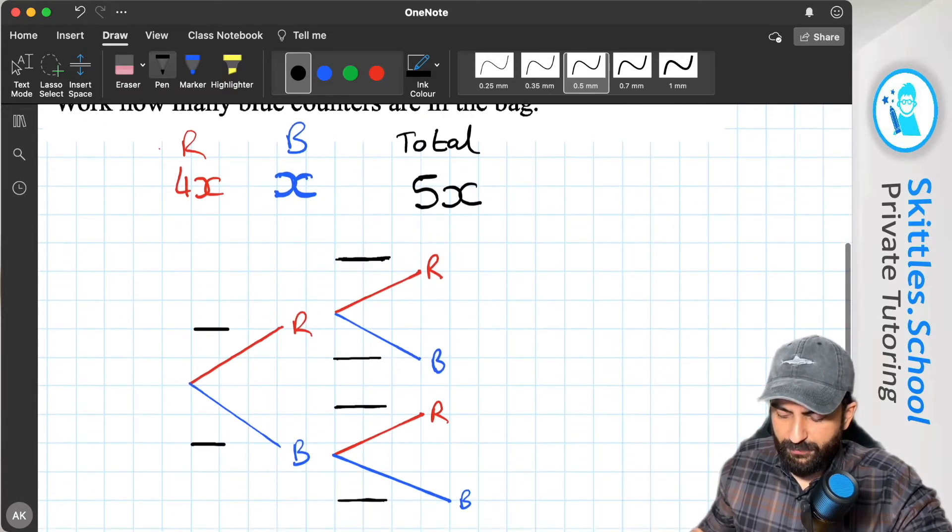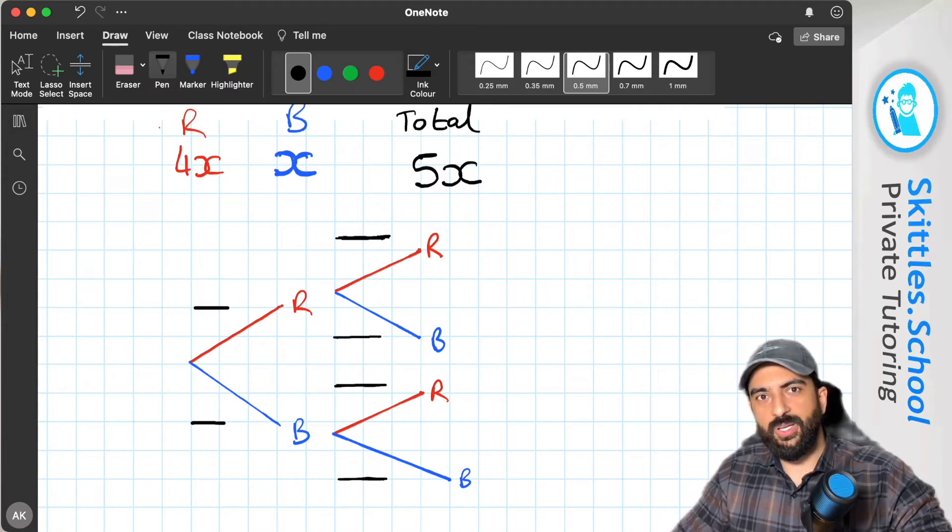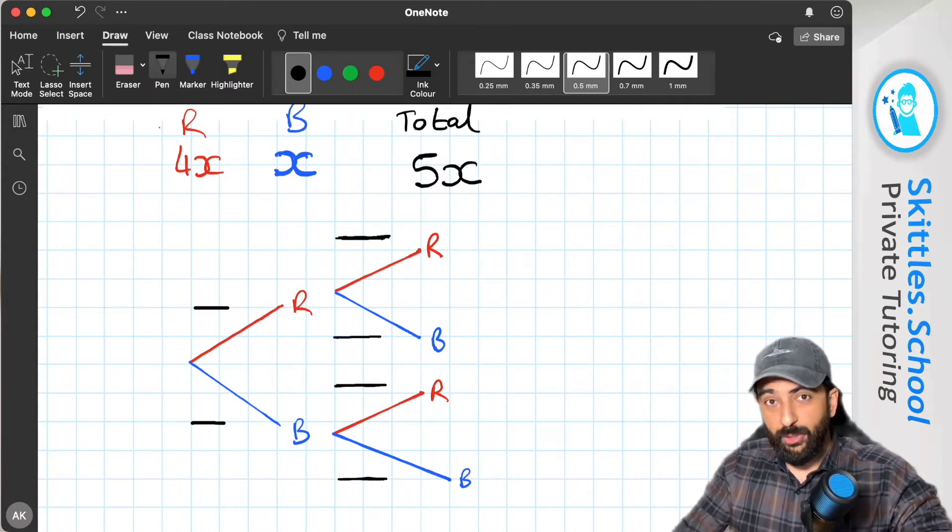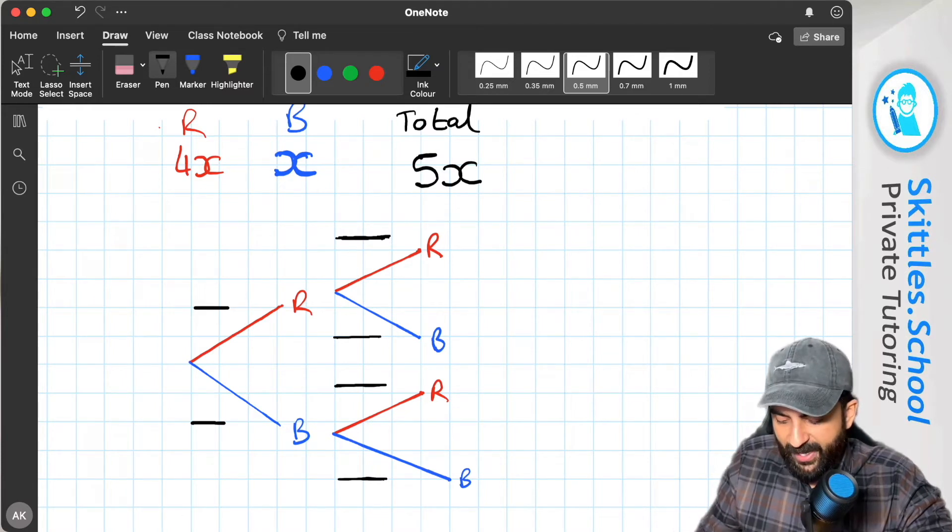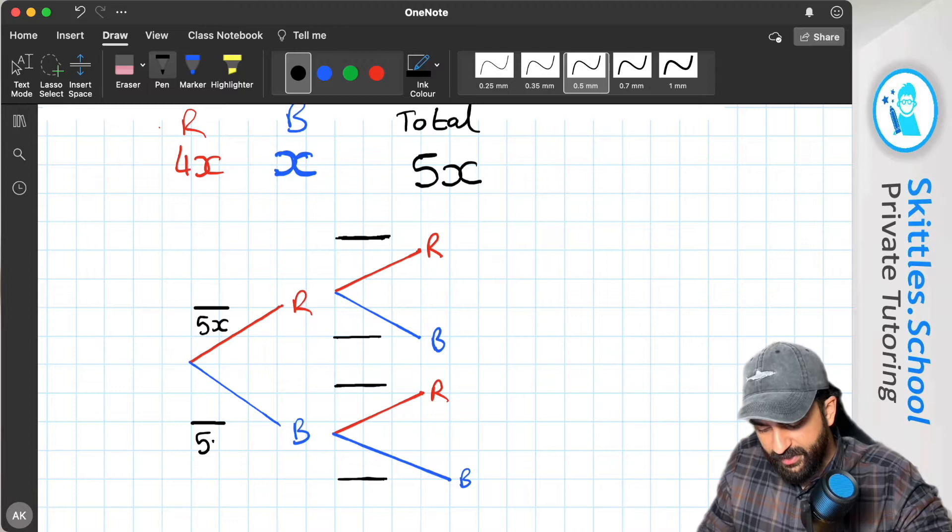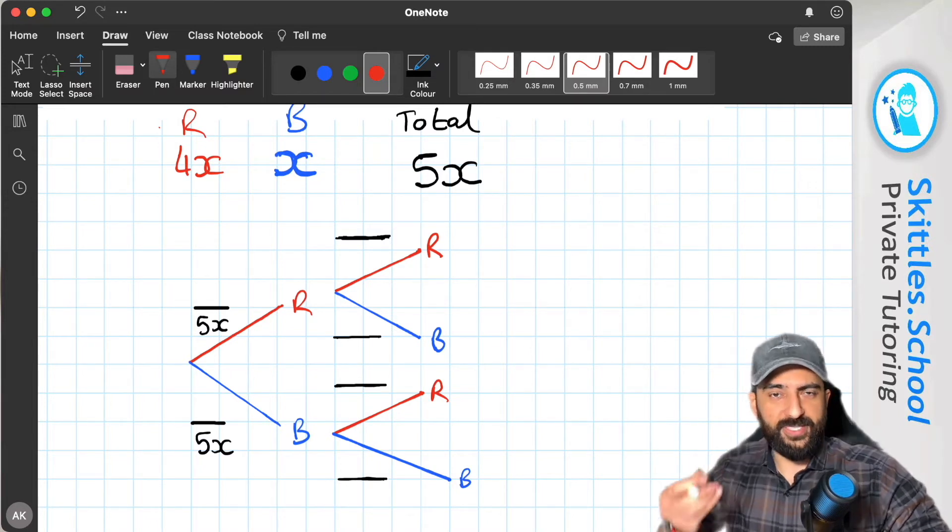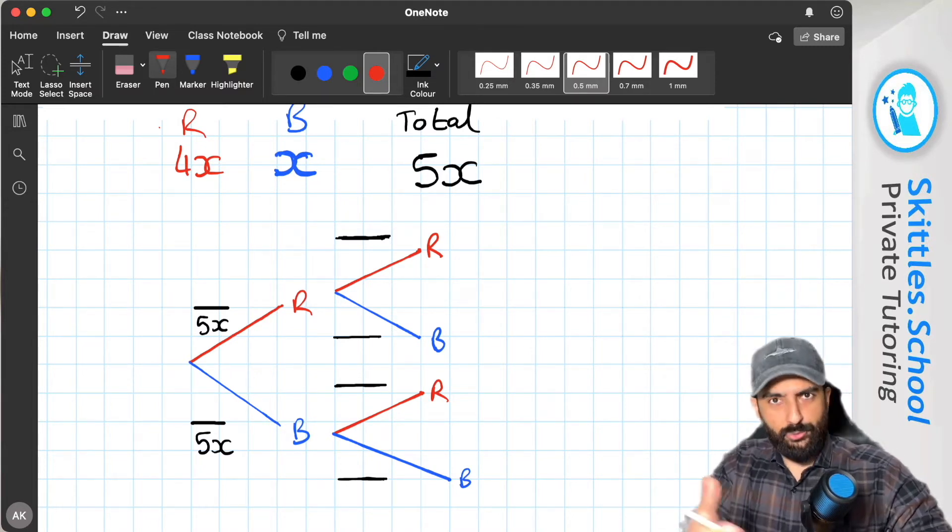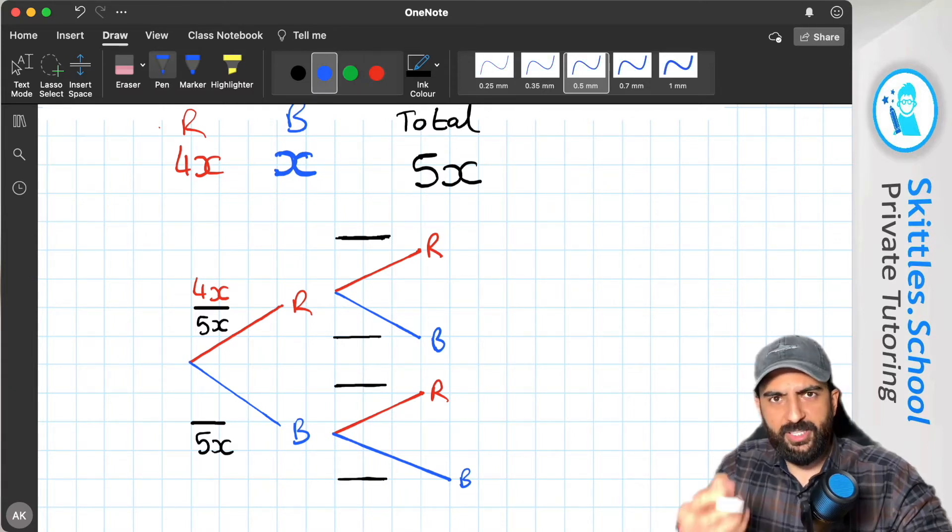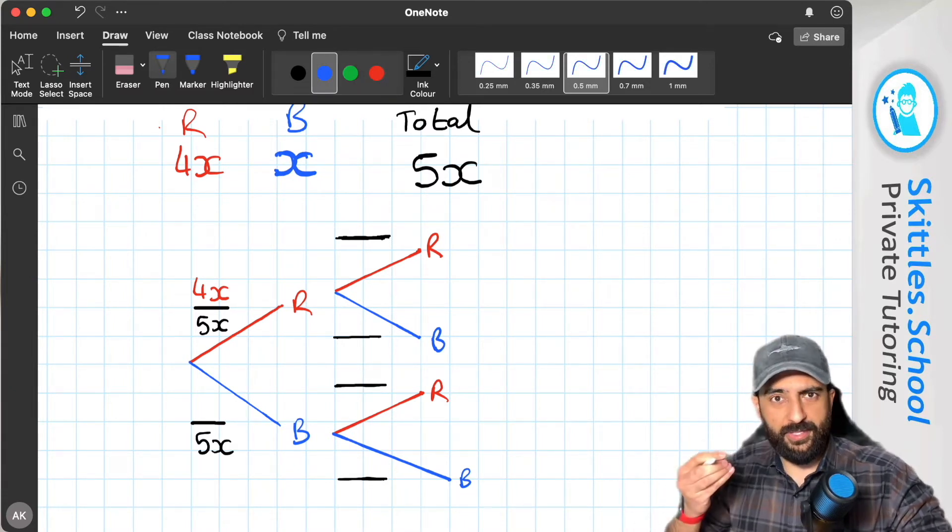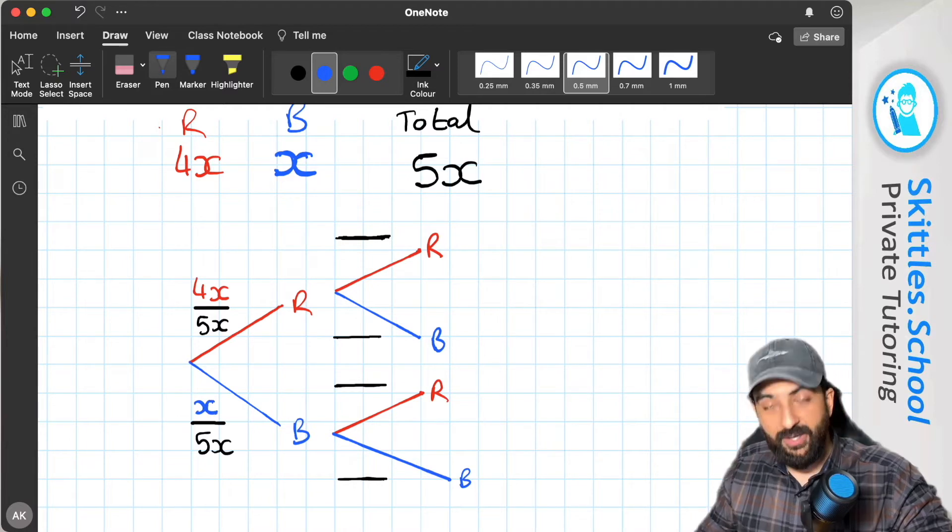Okay, so let's take a look at this probability tree. I've just pre-drawn a tree and we're going to fill the values in together. So straight away, the first branch is the first counter. We can either choose a red one or a blue one. Now out of the total, so the total has to be the bottom number on those first two branch fractions. We know the total is 5x, so we put the 5x underneath here because that's our total. The probability of choosing a red counter as that first counter is 4x out of the 5x because there's 4x red counters out of the total of 5x counters. And the probability of choosing a blue counter as the first counter is 1x because there's just x blue counters out of the total of 5x counters.